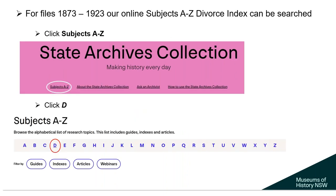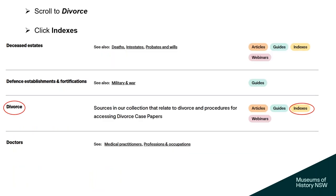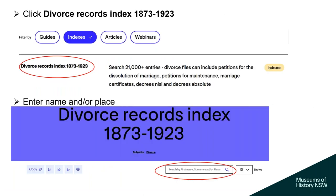For files 1873–1923, our online Subjects A–Z Divorce Index can be searched. Click on Subjects A–Z, then click on D, scroll to Divorce, and click Indexes. Then click on the Divorce Records Index and enter the name and place in the search bar.